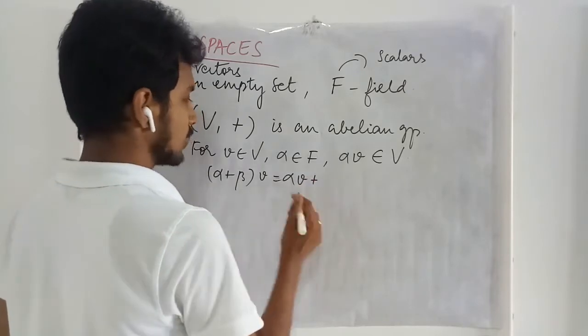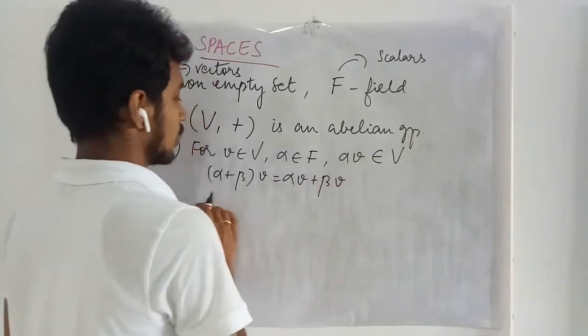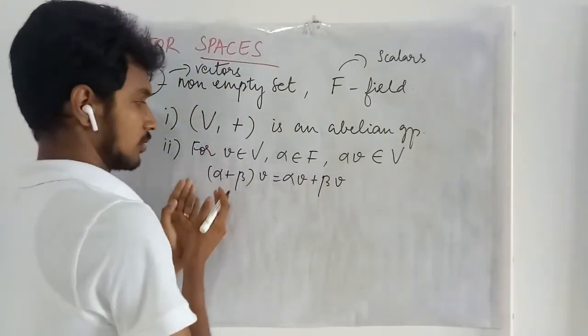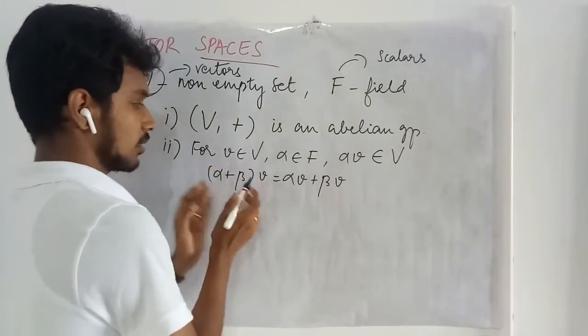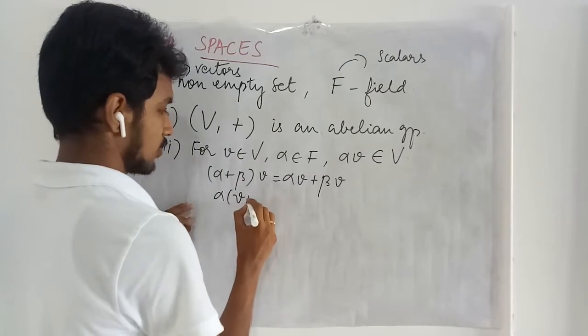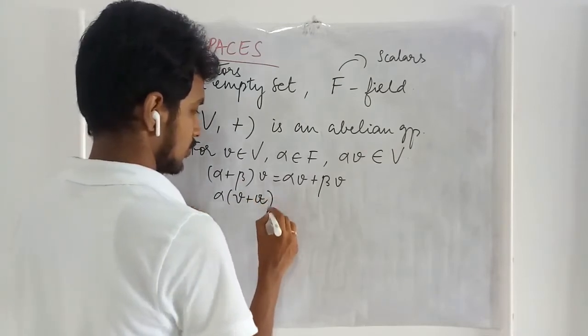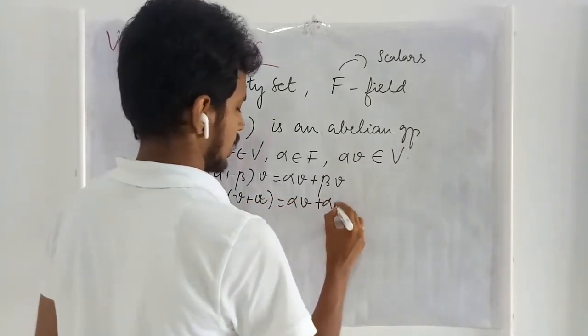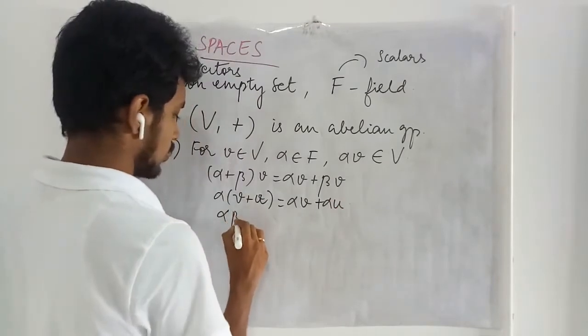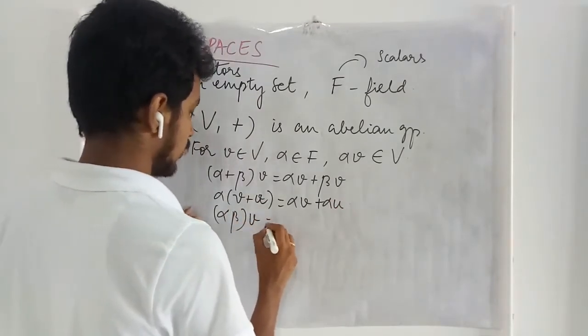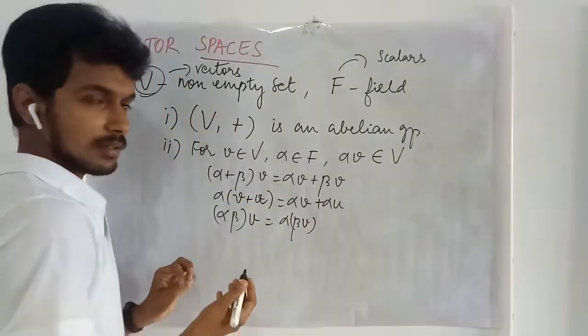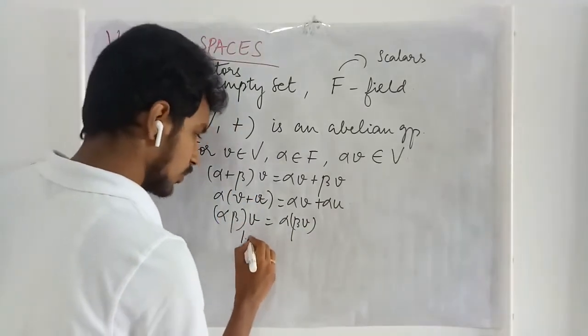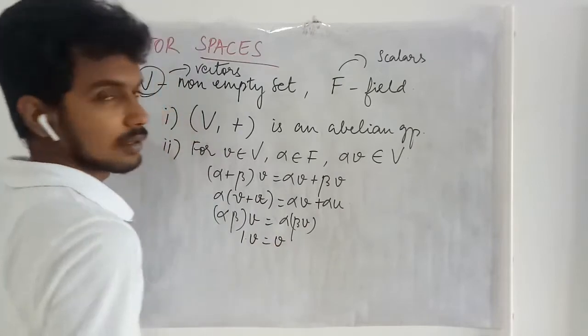That is it is distributed with respect to the addition, alpha times V plus U. Then the associativity with this thing. And there exists some 1 in V such that it is 2.